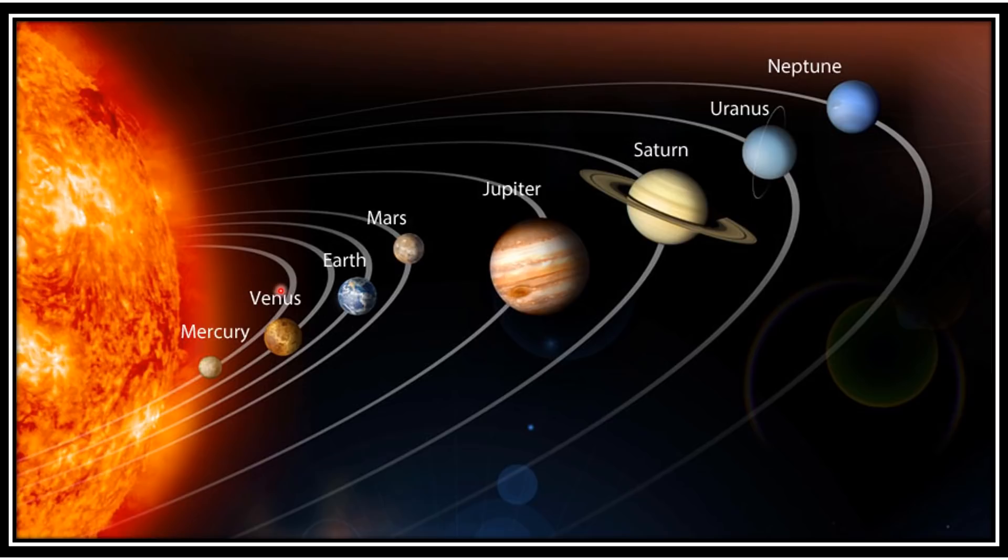The solar system consists of eight planets revolving around the sun in their orbits. Mercury - it is the smallest planet and nearest to the sun. It has no satellite of its own.